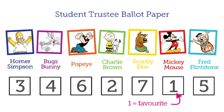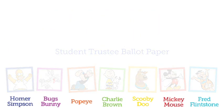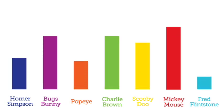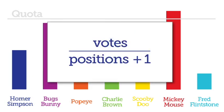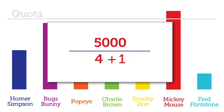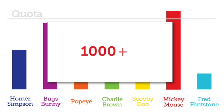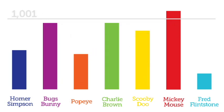So after you've voted, this is what happens. It's a bit complicated, but it is fair. We start with the first round of first preference votes. In order to win, each candidate must get a minimum number of votes, which is called the quota. This is worked out by the total number of votes, which in this case is 5,000, divided by the number of positions to fill, plus one. Then add one to that, and our quota is 1,001.